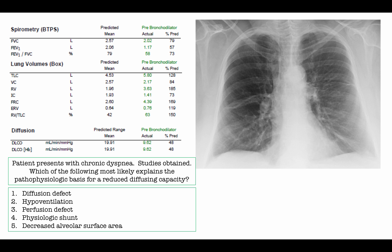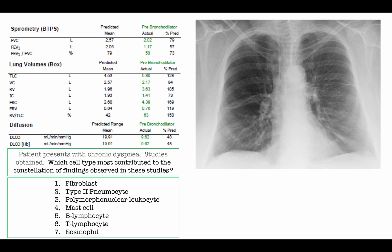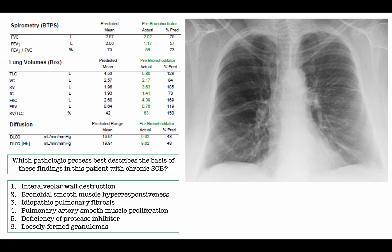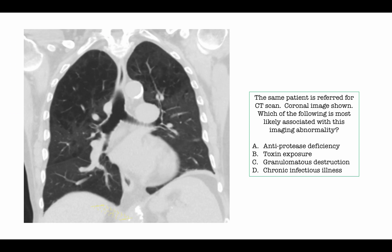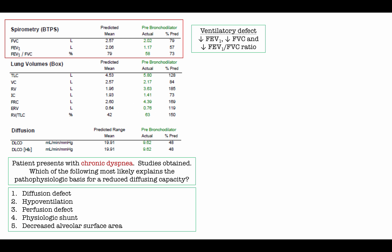Questions two through five are presented, including a coronal view of a CAT scan on this patient. Let's begin the discussion. To get the correct answer to this series of questions, you need to interpret the pulmonary function test correctly. Let's start by reviewing the spirometry.